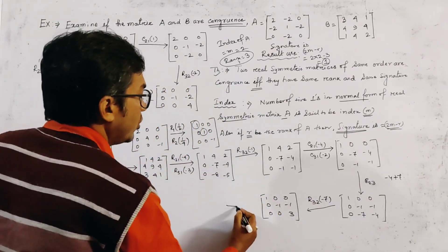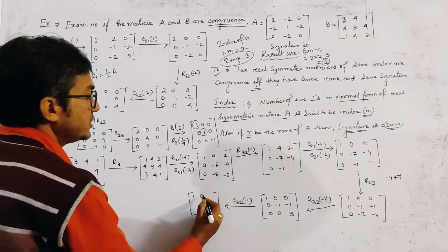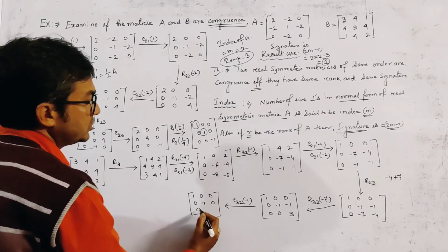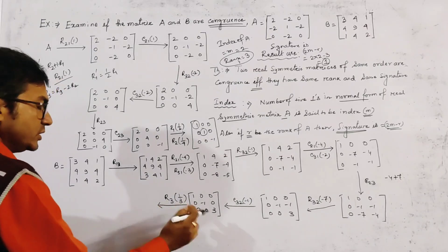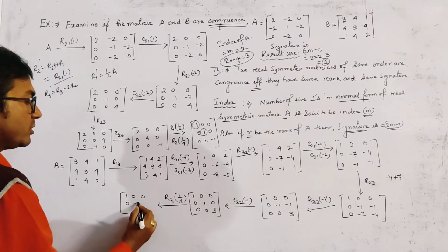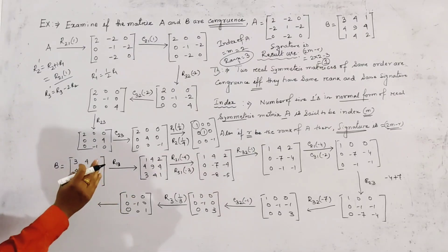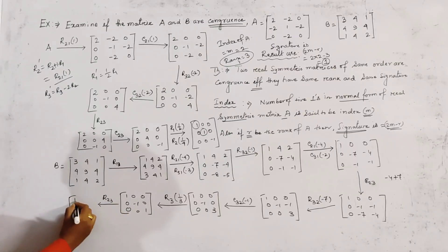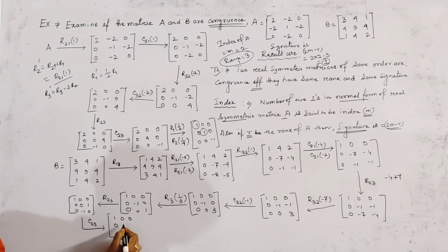After further operations, we get the matrix [1, 0, 0], [0, -1, 0], [0, 0, 1]. We then apply R(1/3) scaling. After interchanging row 2 and row 3 with R23, we get [1, 0, 0], [0, 0, 1], [0, -1, 0]. Then interchanging columns C23 gives [1, 0, 0], [0, 1, 0], [0, 0, -1], which is the normal form of B.